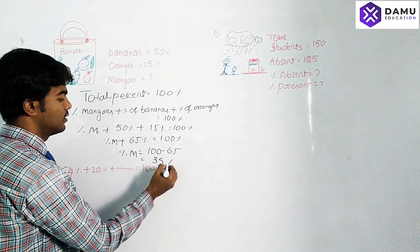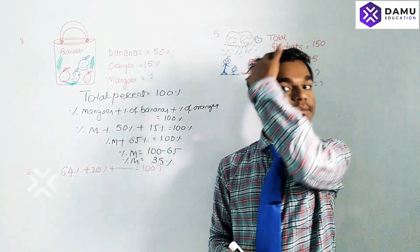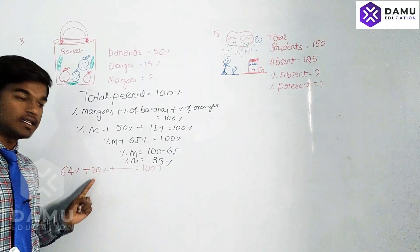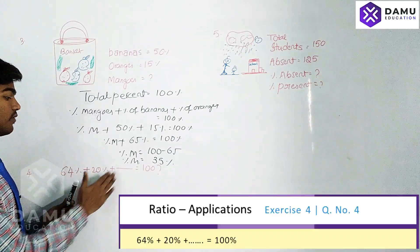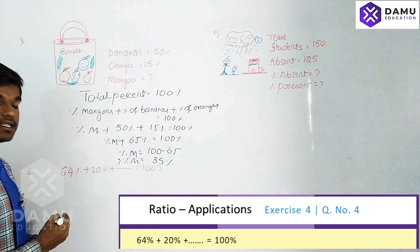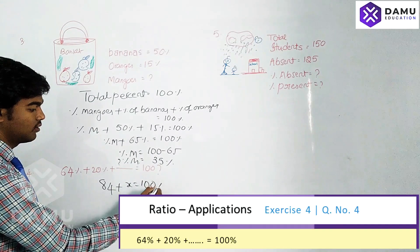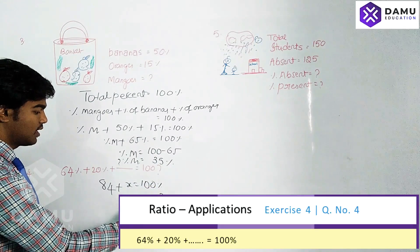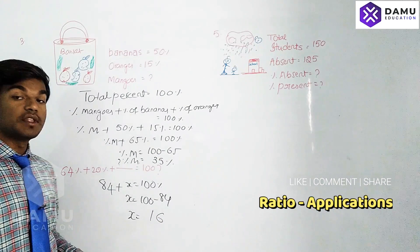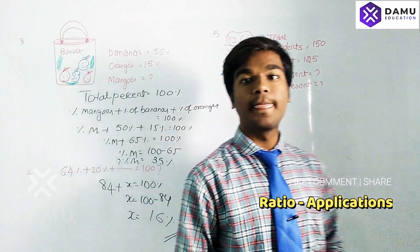Therefore the percentage of mangoes is 100 minus 65, which equals 35%. Next, question 4: 64% plus 20% plus some unknown equals 100%. So 64 plus 20 is 84, and X equals 100 minus 84, which is 16%. So X is 16%.